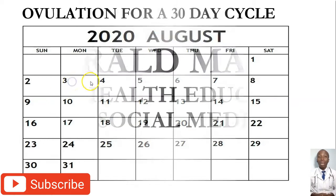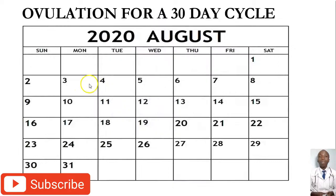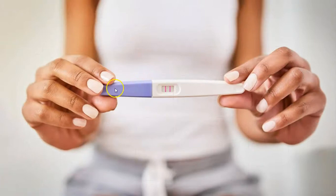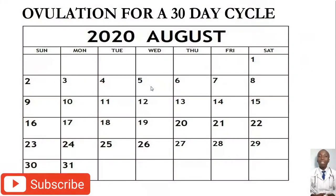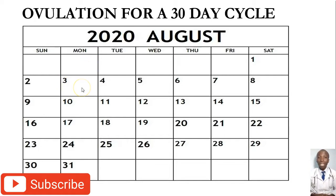If you saw your periods on 3rd, 4th, and 5th — we are just taking this as an example, it could be any other day — assuming you see your periods on 3rd, 4th, and 5th, and you want to calculate your ovulation date, you simply get the first day you saw your periods, which is on 3rd, and then you count the days you are going to be in your periods. The counting has to begin from the first day when you saw your periods, and then you specifically count 14 days from that first day.